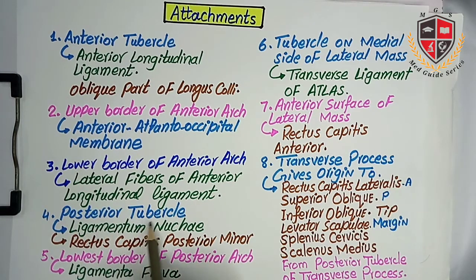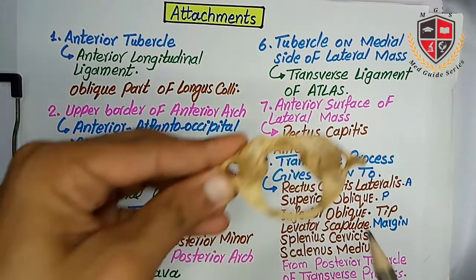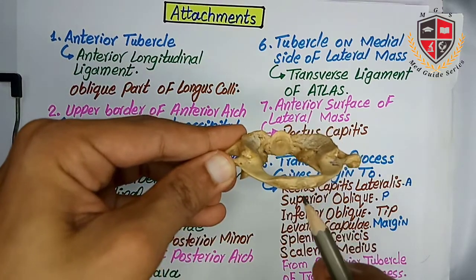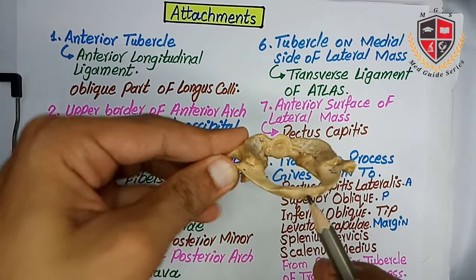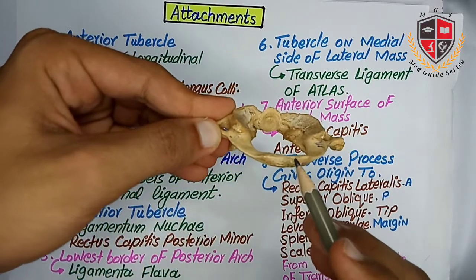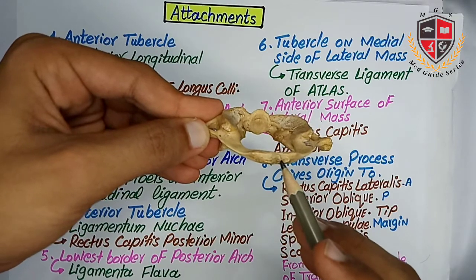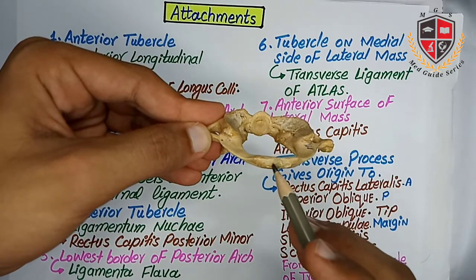The posterior tubercle provides attachment to the ligamentum nuchae and rectus capitis posterior minor muscle.